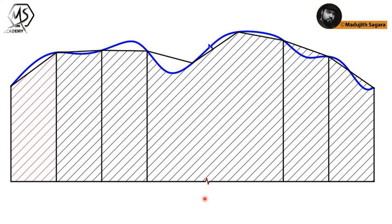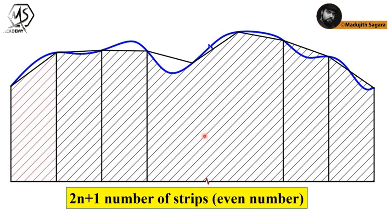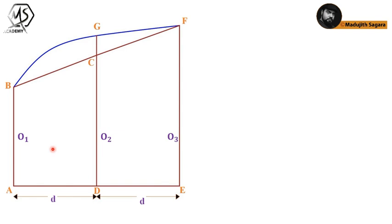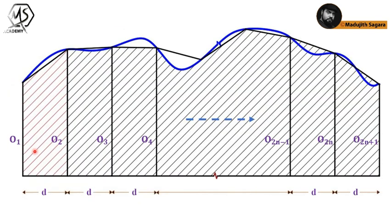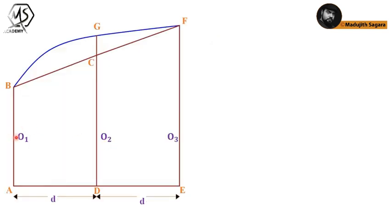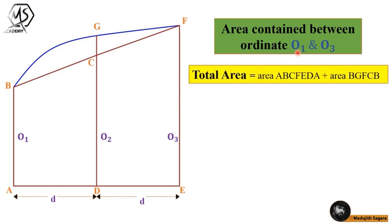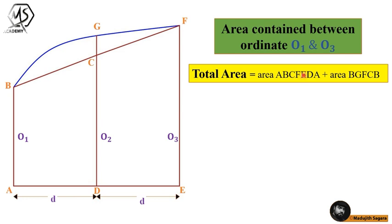To derive a common equation I have converted this into 2n+1 number of ordinates, which gives an even number of strips. The final outcome would be like that — you can see this is o1 and this is o(2n+1). The similar distance between two ordinates is d. To make a very clear explanation, I have extracted the area between ordinate o1 and ordinate o3 separately. You can see the distance between two ordinates is d, and I am going to calculate the area contained between ordinate o1 and o3, that is the area a-b-c-f-e-d-a.